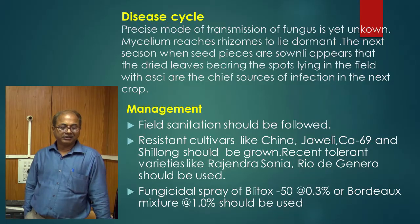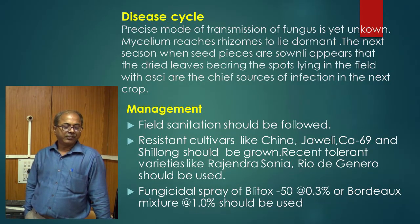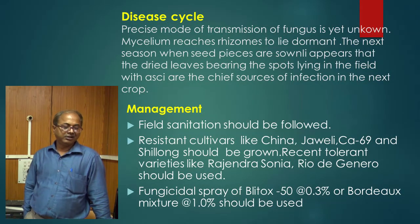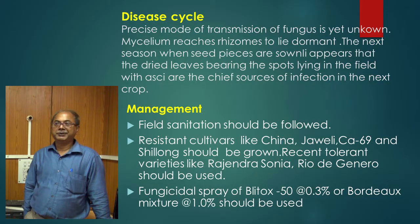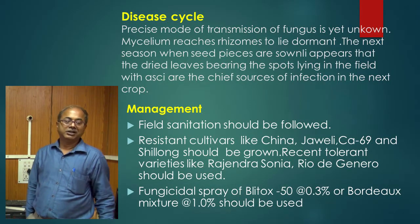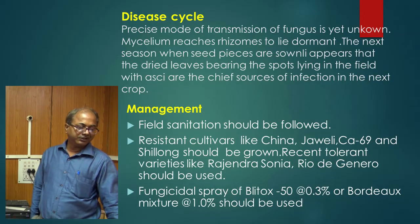Recent tolerant varieties like Rajendra Sonia and Ryu Digenero should also be used. If symptoms appear in the field, spray with Blitox 50 at 0.3% or Bordeaux mixture prepared at 1%. These chemicals are effective in managing leaf spot of turmeric.